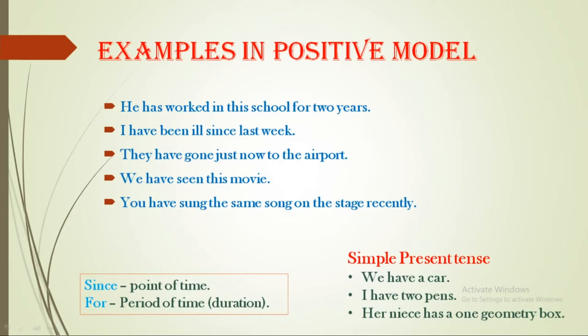Since versus for: 'since' is used for a point of time, 'for' is used for a period of time or duration — this is a common confusion. Also, differentiation: when 'have' and 'has' are auxiliary verbs used with V3, it is present perfect tense. When 'have' or 'has' is the main verb, it is simple present tense. For example: 'We have a car', 'I have two pens', 'Her niece has one geometry box' — these are simple present tense.